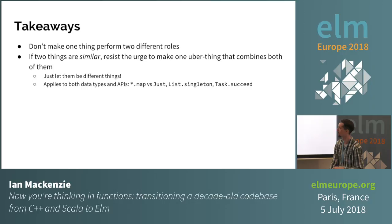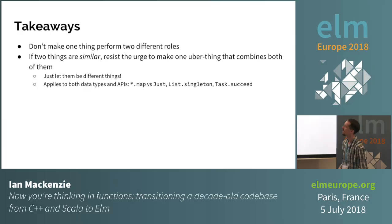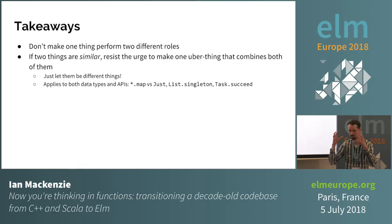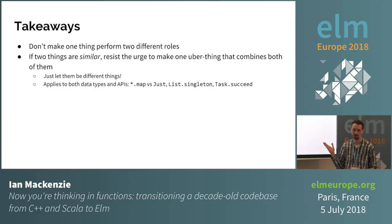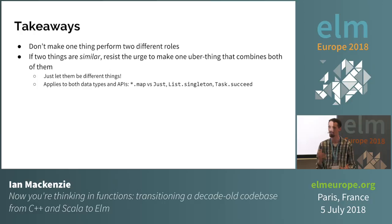Takeaways from lesson number one: don't make one thing perform two different roles. If that happens, try thinking about what if this was just two separate things. If two things are similar — like vectors and unit vectors are very similar — resist the urge to make one thing that combines them. Just let them be different things, and it's usually kind of fine. I personally think this applies to both data types and APIs. I think it's fine that we don't have one pure function — we have functions with different names that make sense for different data types, and it just kind of works out.